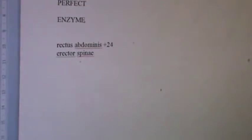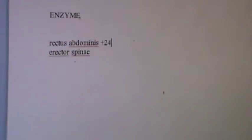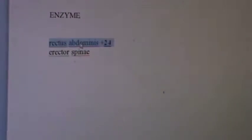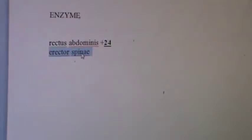I marvel that rectus abdominis is plus 24 from erector spinae. Both of them parallel father and differ by 24, and these are two of my favorite muscle groups to work: center the body, rectus abdominis and erector spinae.